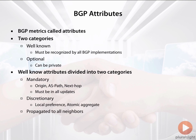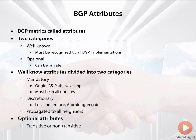That's completely opposite of your optional attributes, which are either going to be transitive or non-transitive. If they're marked as transitive and I don't understand what the attribute is, I'll just forward it on to a neighbor and ignore it. If it's non-transitive and I don't know what it is, I'm just going to drop it — I won't even pass it to a neighbor.